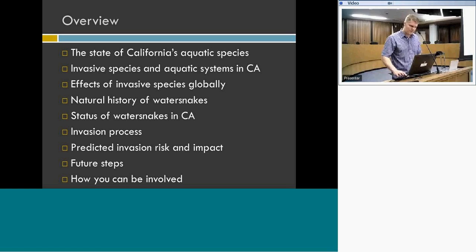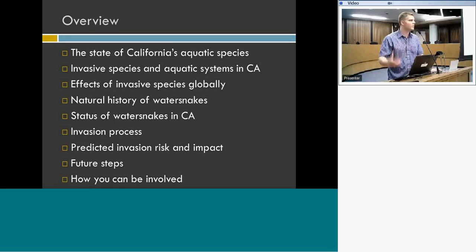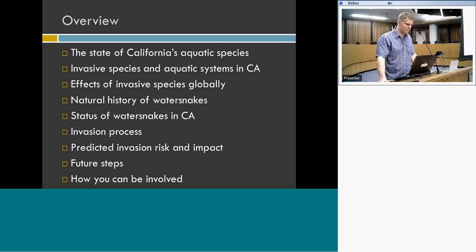I want to give you an overview of the issues I'm going to discuss today. I'll describe the state of California's aquatic species, talk about invasive species in aquatic systems here in California, discuss the effects of invasive species globally, cover the natural history of the water snakes we'll mainly focus on, describe their status in parts of California, the invasion process, our work projecting potential invasion risk, risks to native amphibians and inland fishes and native garter snakes, future steps, and how you can be involved as members of the public or staff of the California Department of Fish and Wildlife.